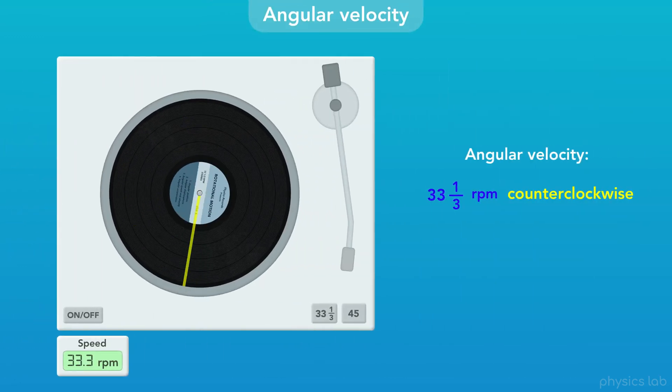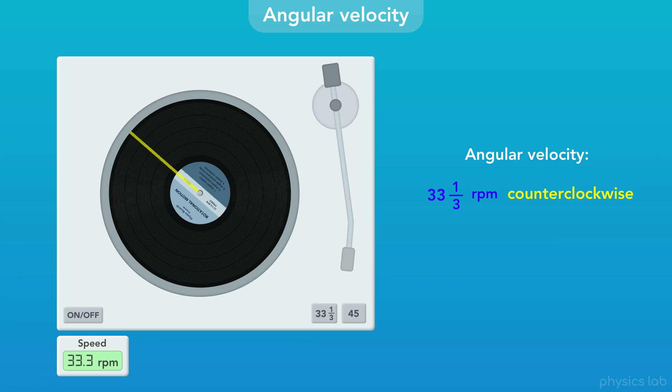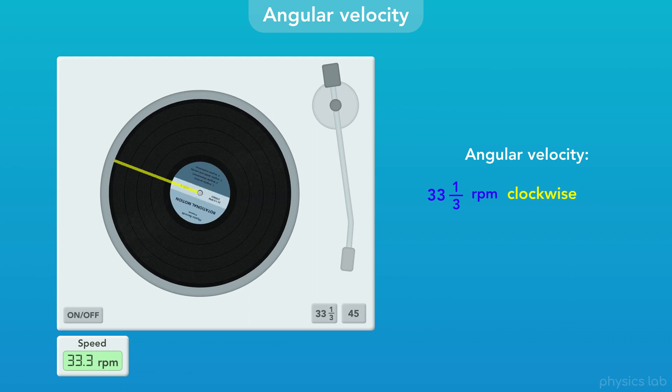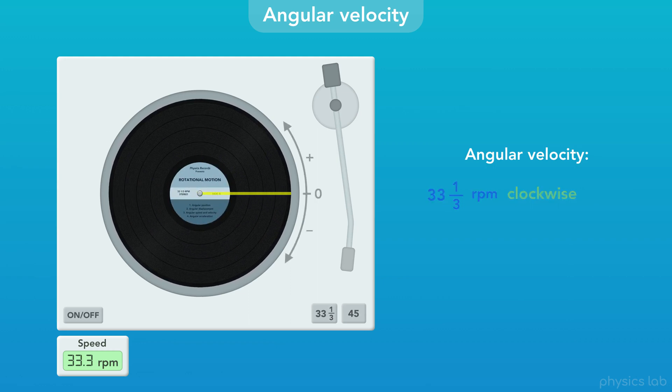So this record has an angular speed of 33 and a third RPM, and we could say the record is rotating counterclockwise or clockwise. Or if we use a rotational axis, we usually say that counterclockwise is the positive direction and clockwise is the negative direction.